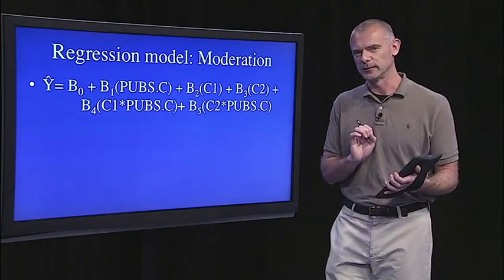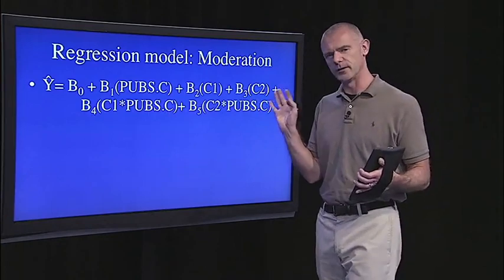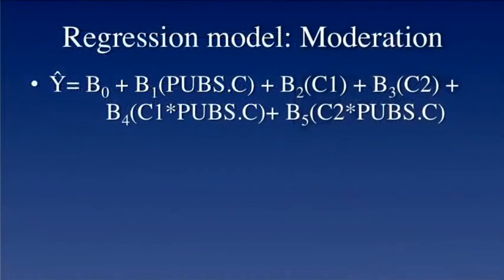Let's look at the moderation model. This is where everything is included: centering, dummy codes, and interaction terms — as complex as it gets. The model includes the main effect of publications (centered), the two dummy codes representing department, and then two product terms — C1 times pub-centered and C2 times pub-centered. So we now have five predictors in this equation.